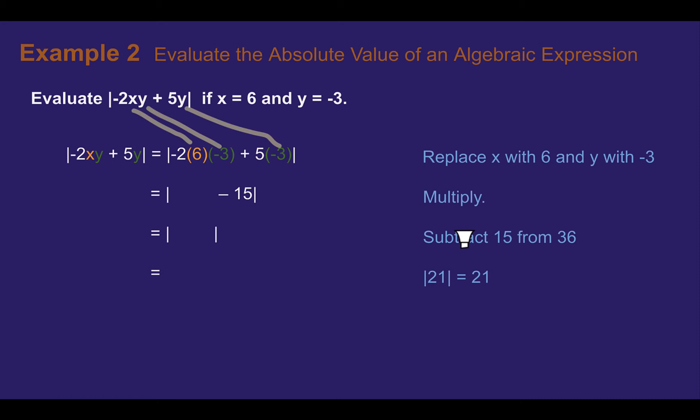Now we can go through and begin to simplify. Following order of operations within the absolute value, multiplication is going to come first. So they already showed us 5 times negative 3 is negative 15. We need to multiply negative 2 times 6 times negative 3. I'm going to think back to the associative and commutative properties and rearrange this in my head and do negative 2 times negative 3 to get 6 and then 6 times 6 is 36.